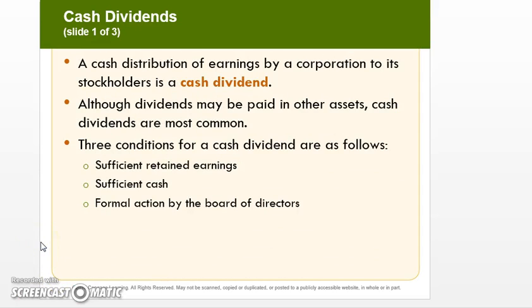A cash dividend is nothing more than a payout to the shareholders based on the number of shares that a person holds. This is kind of a reward for owning the share — a return on investment type of transaction — so that the investor will be interested in the stock and possibly buy more stock.